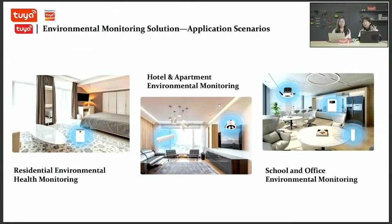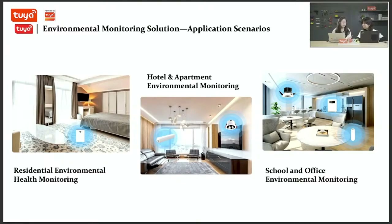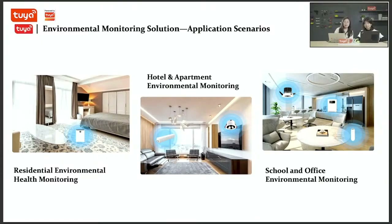Moving on to the next one, we are giving you more scenario examples. On the last slide we shared what we can do for the environmental solution. Now we are sharing in what kind of application scenarios those environmental solutions can be applied. For the residential environment, we can do health monitoring with smart devices — CO2 sensors, humidity sensors, fire alarm sensors — to make the residential environment smarter, healthier, and safer. By integrating environmental health cloud products into community environmental management, it can focus on household health all the time.